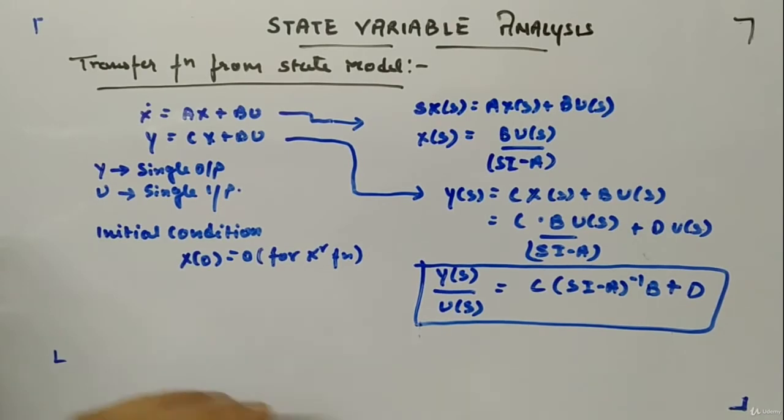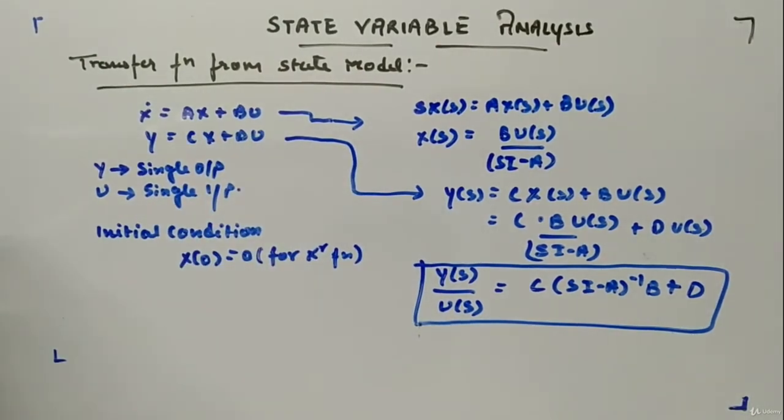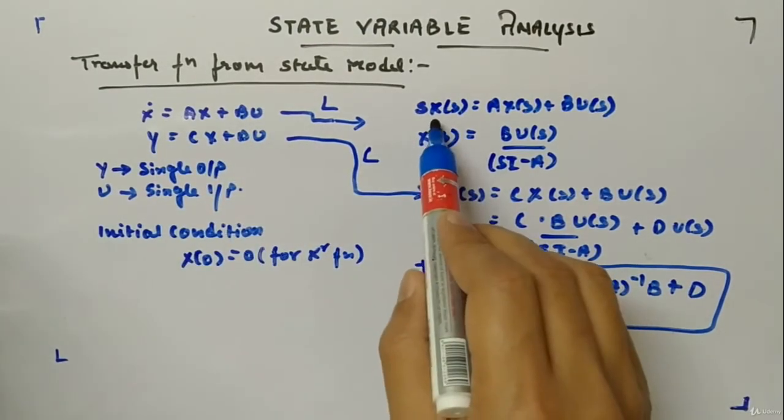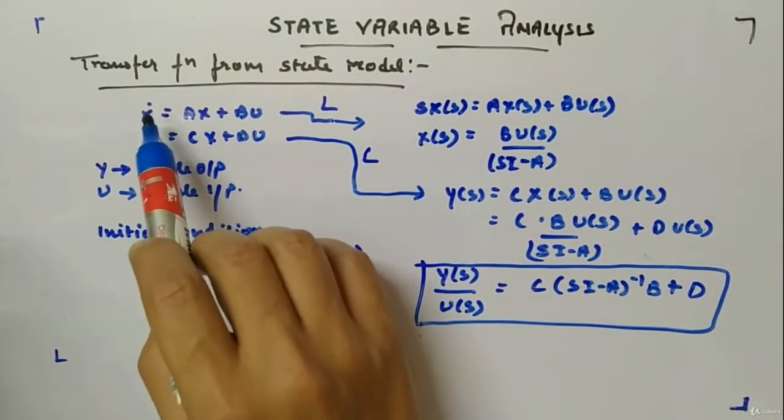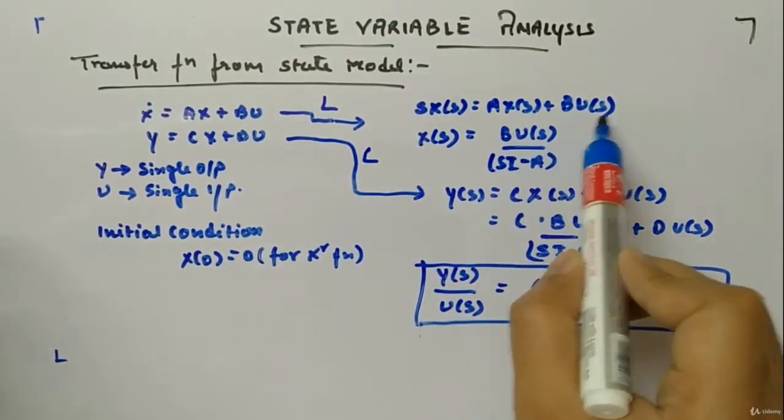Now if you will take the Laplace transform of these two equations, the first equation will become sX(s), since it is a differentiation, sX(s) is equal to AX(s) plus BU(s).